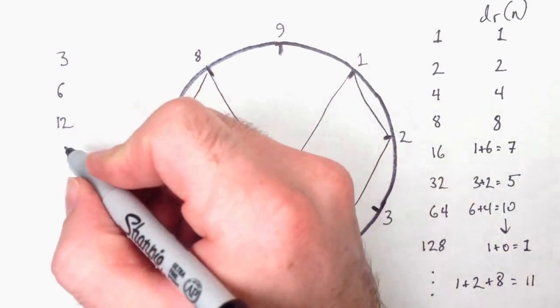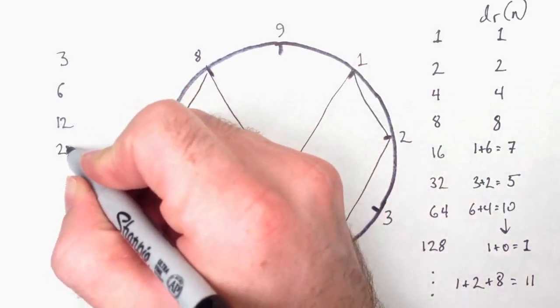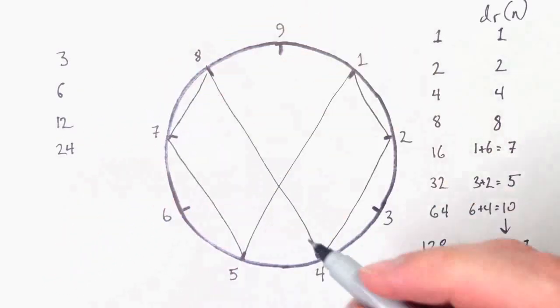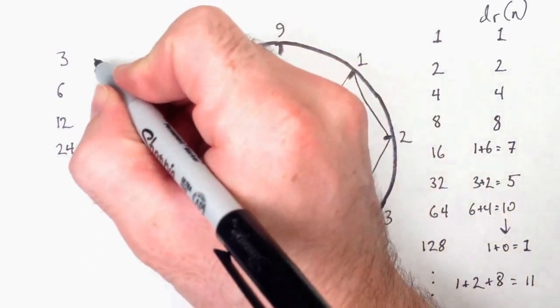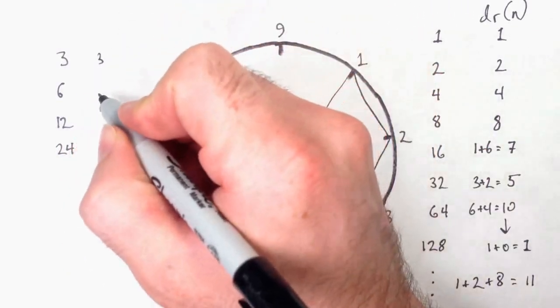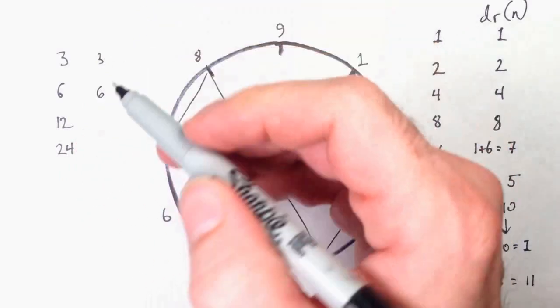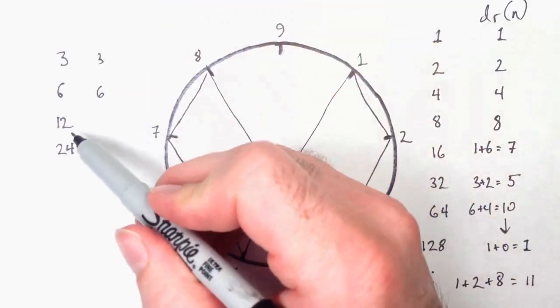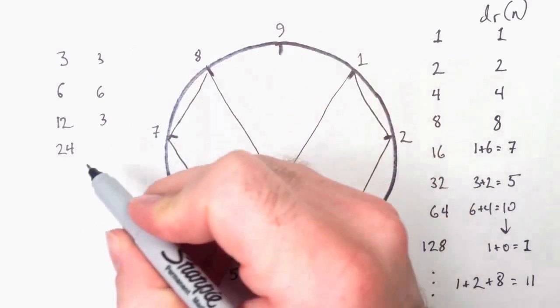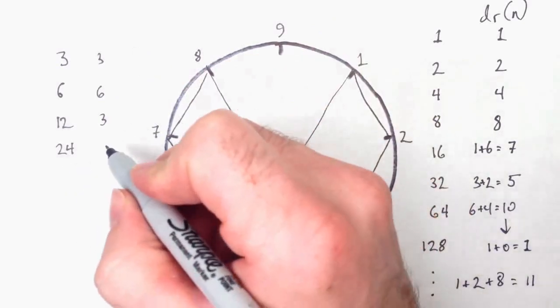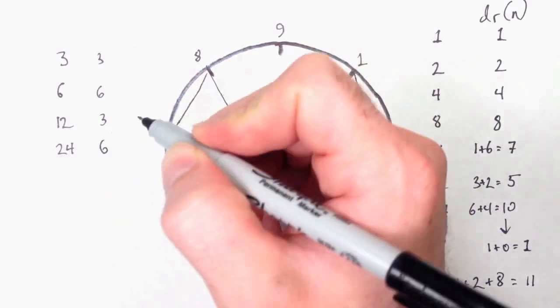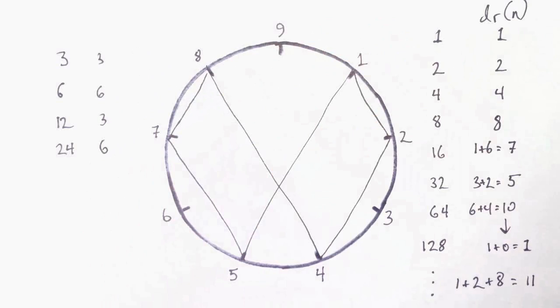Right, so 3, 6, 12, the next number there should be 24. Okay, considering their digital roots, 3 and 6 are single-digit numbers. They have their own digital root, but then there's 12. 1 plus 2 is 3. 2 plus 4 is 6. So 3 and 6, when you double them, are going to bounce back and forth between each other forever.